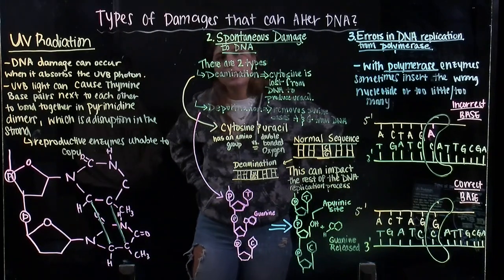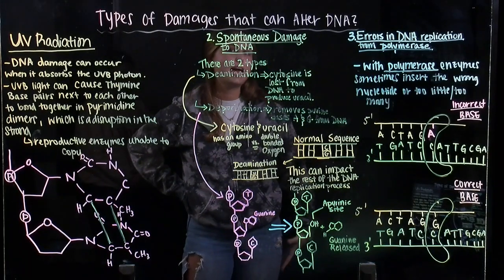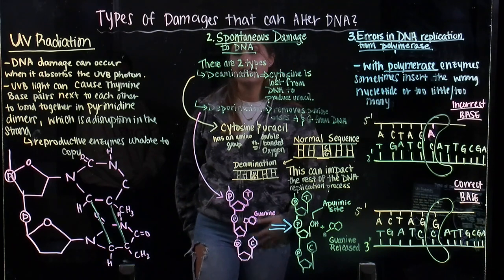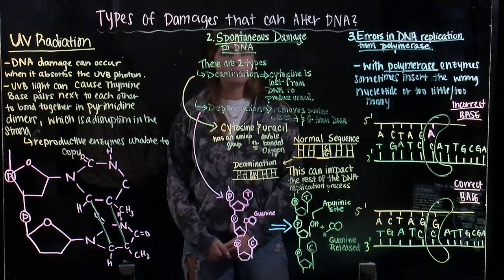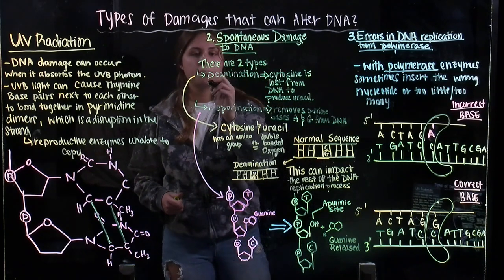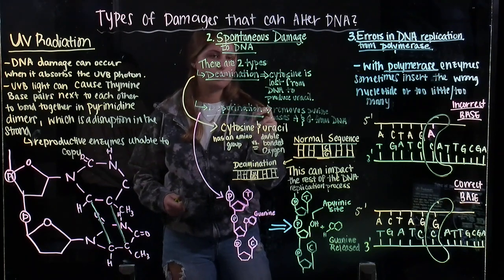The second part of this video is going to discuss the spontaneous damages that occur in DNA. There are two specific types of these damages that are represented by deamination and depurination.